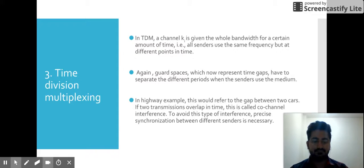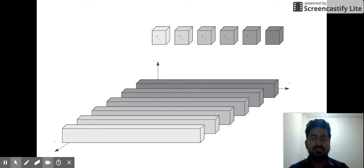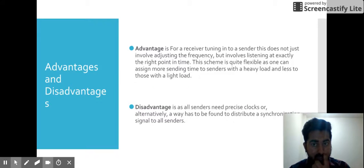This is a diagrammatic representation of time division multiplexing. Every channel is assigned a frequency for a different time, for a slot of time. Now let's see what are the advantages. For a receiver, tuning to a sender does not just involve adjusting the frequency but involves listening at exactly the right point of time. This scheme is quite flexible as one can assign more sending time to senders with a heavy load and less to those with a light load.